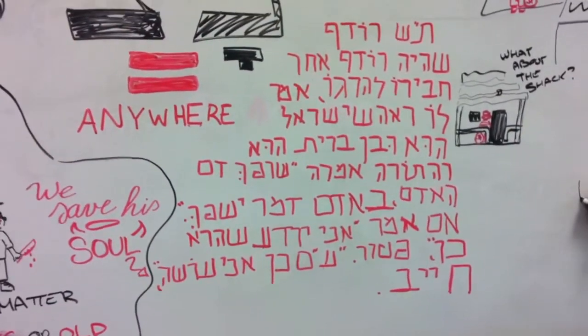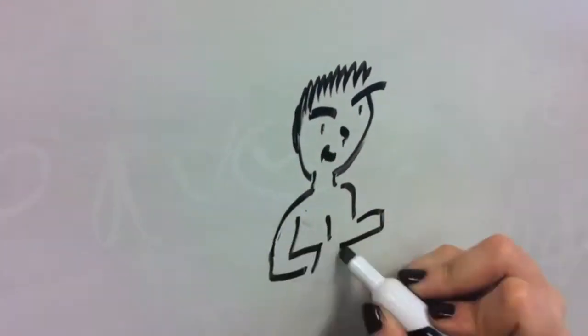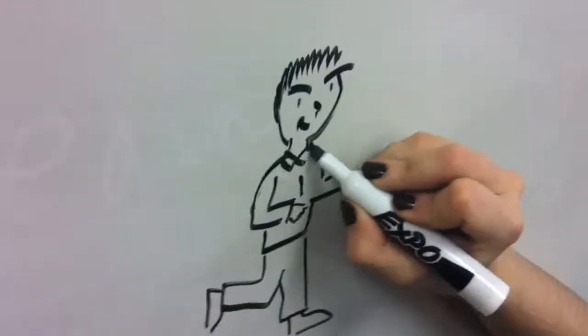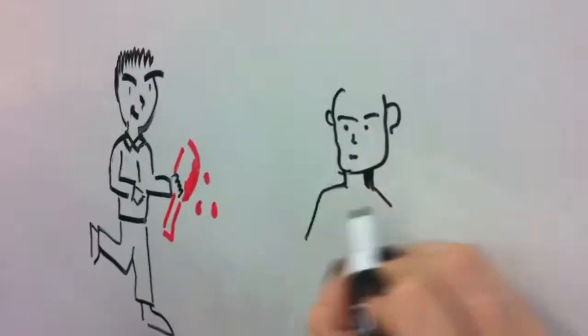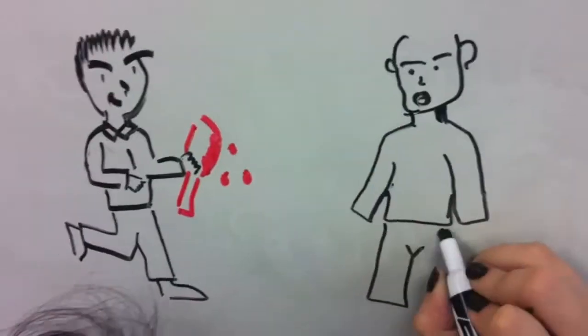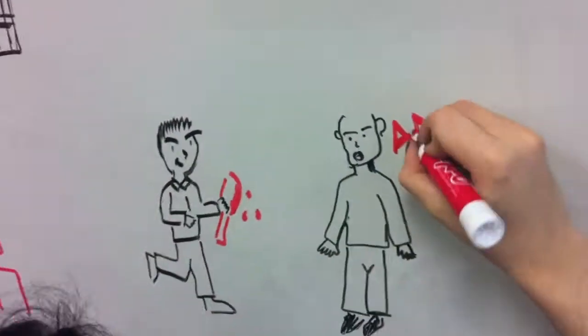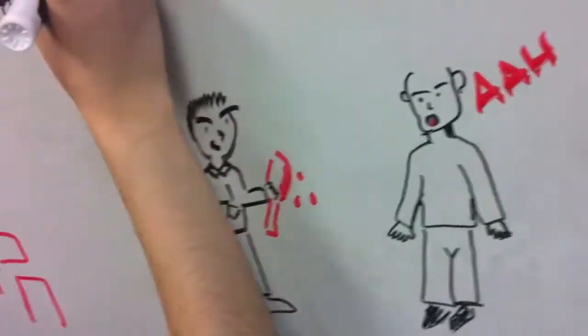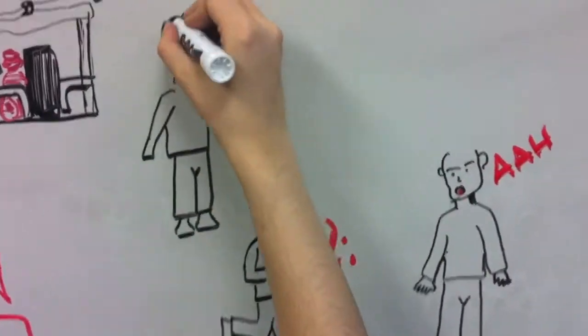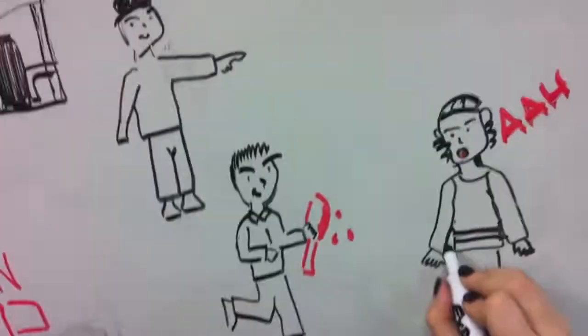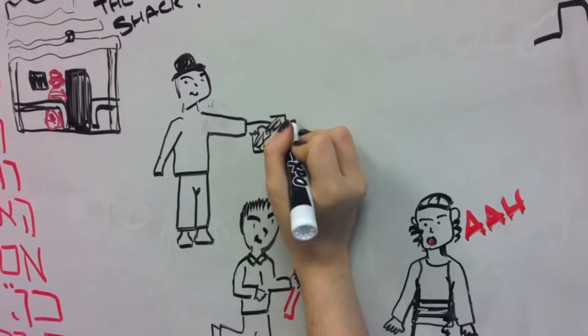Tashma, Rodef Shehaya Rodef Achar Chavero Lehargo - come listen, there is a guy chasing his friend to kill him. We tell him: Ro'ez Sheyisrael Hu Ubein Brit Hu - Look, the person you are chasing is a part of Israel, he is a Jew. HaTorah Amrah, the Torah says: Shafiq Dam Ha'adam Ba'adam Damo Yishafiq - whoever spills blood of man, his blood shall be spilled.